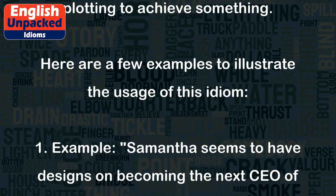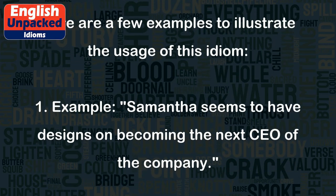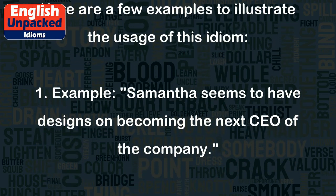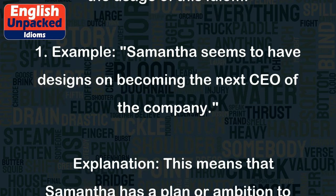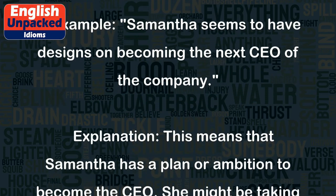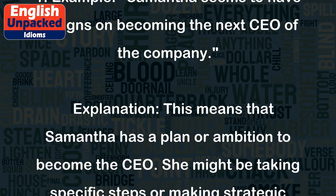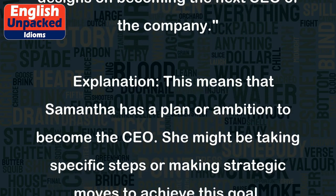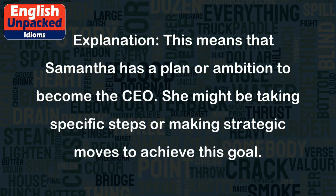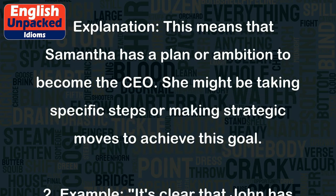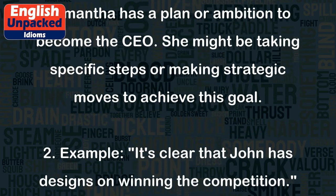Example 1: Samantha seems to have designs on becoming the next CEO of the company. This means that Samantha has a plan or ambition to become the CEO. She might be taking specific steps or making strategic moves to achieve this goal.